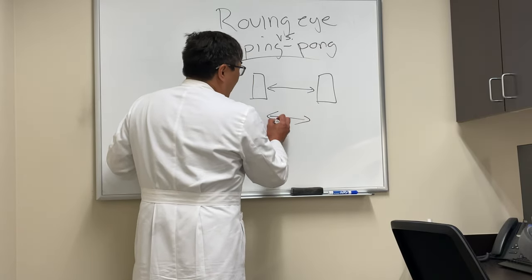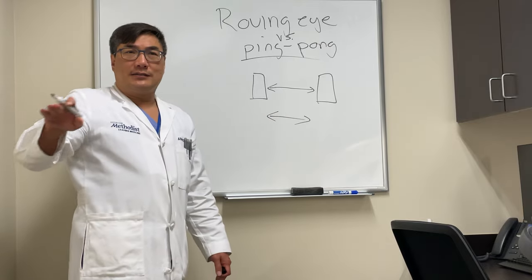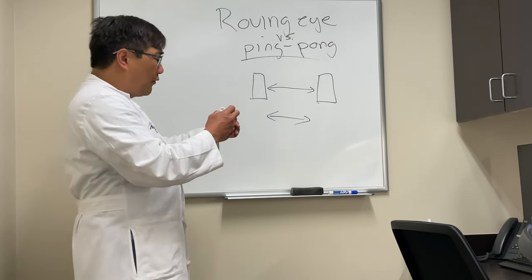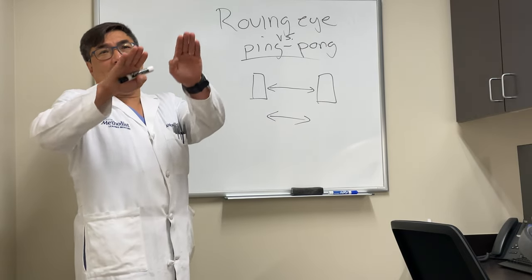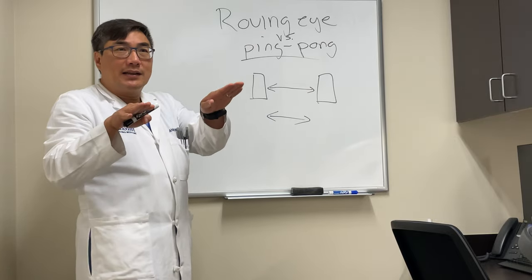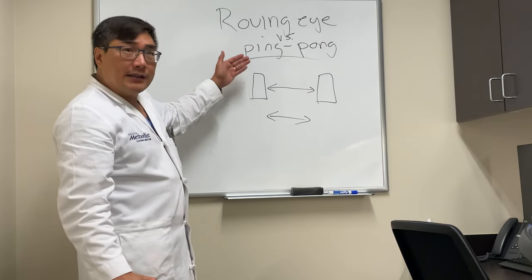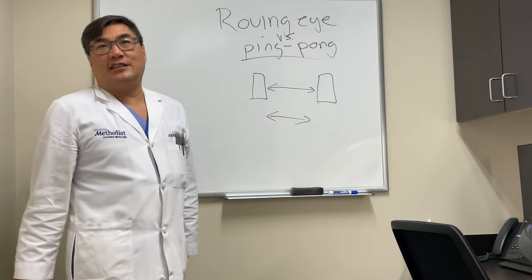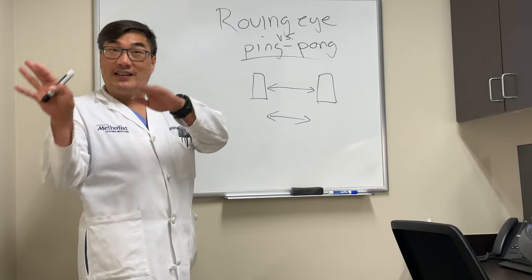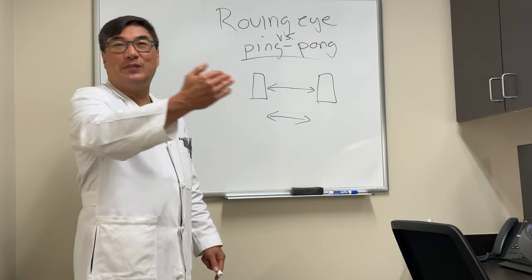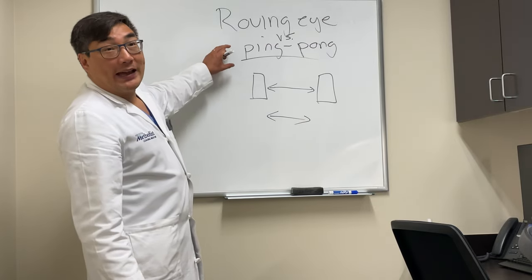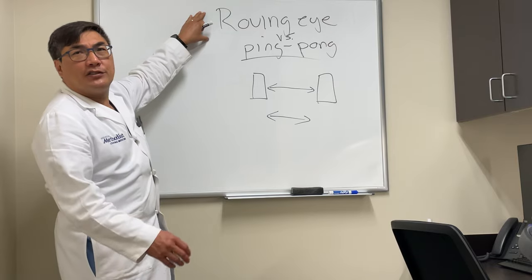This is ping-pong gaze — back and forth like this, no fast component, just slow. It hits the wall and then rebounds. In a roving eye movement, it's not going to be just horizontal, it's going to be multi-vectorial. It's not going to be rhythmic. It's conjugate, but the eyes are just roving because they're not actually fixating on anything. So a roving eye movement roves, and a ping-pong pings and pongs back and forth horizontally.